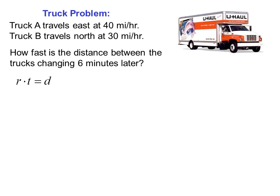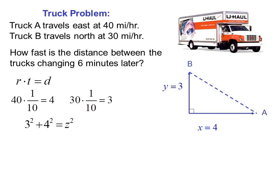We know rate times time equals distance. And so for truck A, 40 times 1 tenth, which is 6 minutes or 1 tenth of an hour, equals 4. So truck A has gone 4 miles. For truck B, we have 30 times 1 tenth, or 3. So truck B has gone 3 miles. So the distance between the two is determined by the Pythagorean theorem. So we have 3 squared plus 4 squared equals z squared. 9 plus 16 equals z squared. 25 equals z squared. 5 equals z. So the distance is 5.